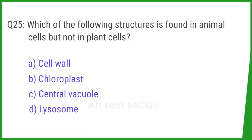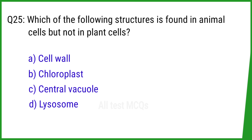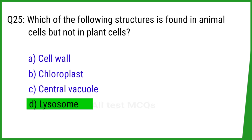Question number 25. Which of the following structures is found in animal cells but not in plant cells? The right answer is option D: Lysosome.